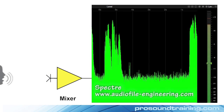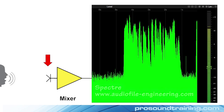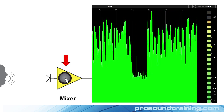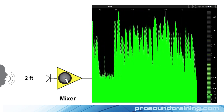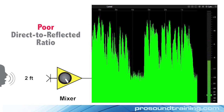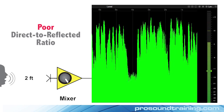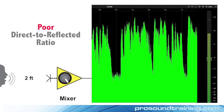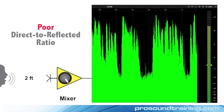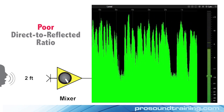The meter shows what's being picked up by the microphone in my office. I've got the input gain of the mixer cranked up and I'm well off the microphone — a couple of feet. This produces a poor direct-to-reflective ratio for the signal going into the sound system, and there's no way to fix this later in the signal chain. So if I don't want the speakerphone effect, I've got to improve the direct-to-reflective ratio of the signal going into the system.